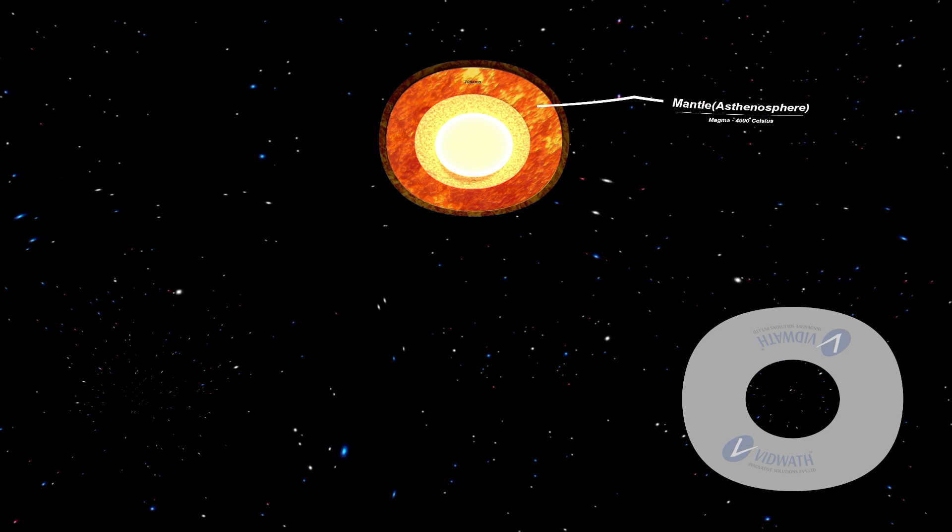It extends from moho's discontinuity to a depth of about 2900 km. The mantle is a partly molten layer and can have temperatures reaching to 4000 degrees Celsius. The hot magma from the asthenosphere travels to the surface of the Earth and escapes as lava from volcanoes.